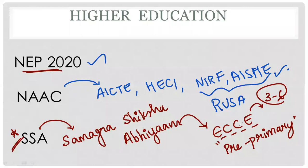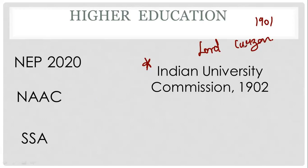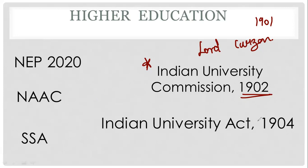I think I will cover all the important topics. This is about today's video. One more thing — the Indian University Commission is called the Lord Curzon Raleigh Commission. Lord Curzon in 1901 came to India as Viceroy General. He came to Calcutta, Bengal region. The Indian University Commission is called 1902, and the commission act came in 1904. Calcutta University is connected to this.